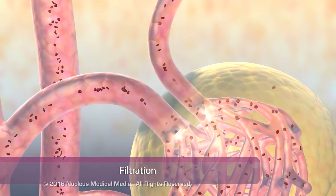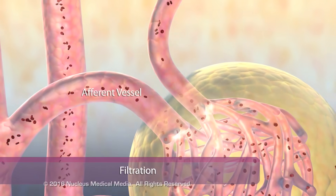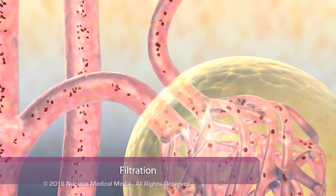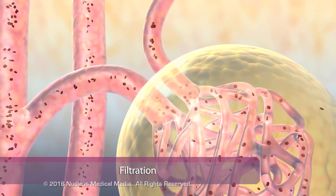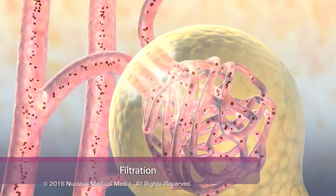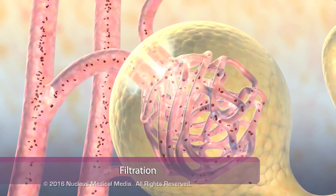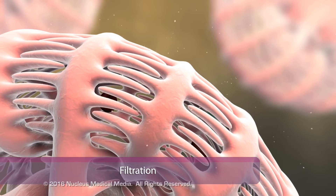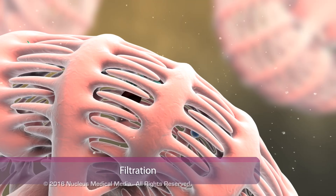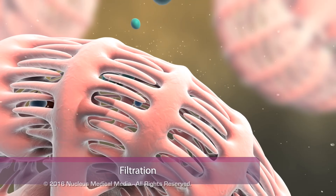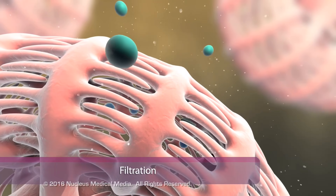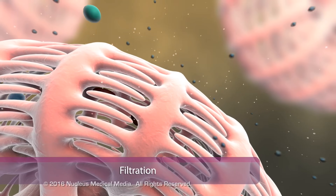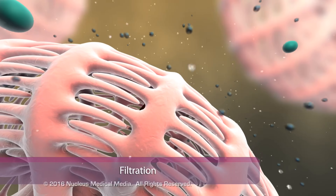Blood flows into the glomerulus via a blood vessel larger in diameter than the vessel draining blood from the glomerulus. This difference in diameter creates the high blood pressure necessary to filter wastes from the blood. The glomerulus functions as a molecular sieve, where waste materials and water pass through, while most normal proteins and cells are kept in the bloodstream. Glomerular filtration removes low molecular weight drugs from the bloodstream.